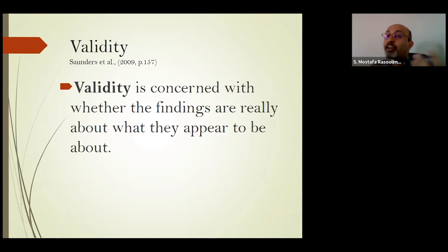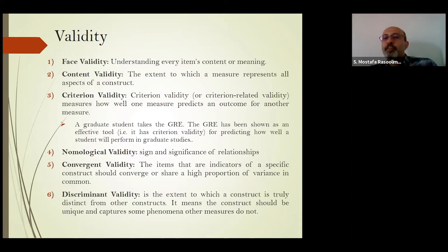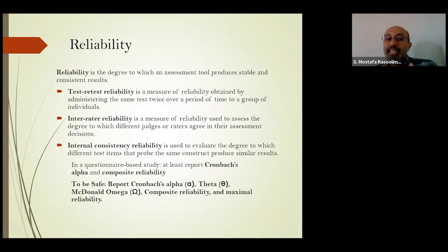So you can understand the difference: in reliability, items should be understandable; in validity, items should be suitable and represent the meaning of the latent variable. There are different methods for assessing validity, like face validity. Face validity and inter-rater reliability can actually be conducted together.